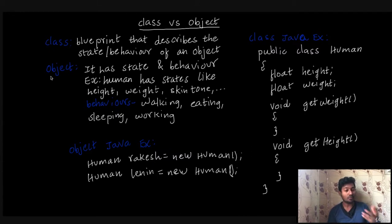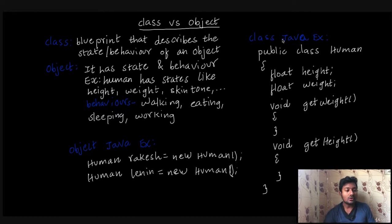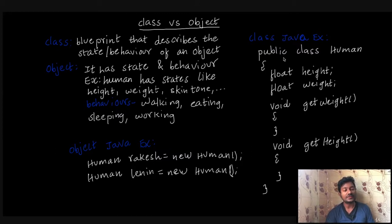We are going to use the end product. In Java, we are going to use the syntax and then we are going to use the example. We will cover the access modifier in the next video.